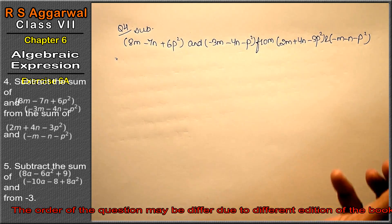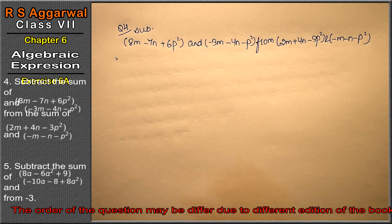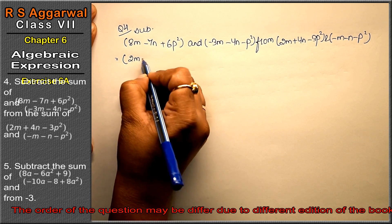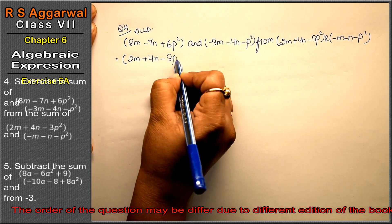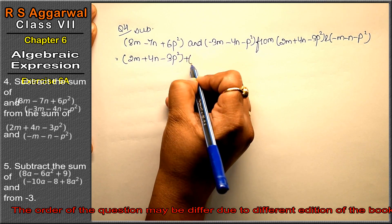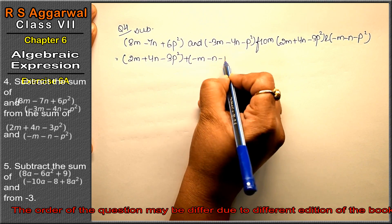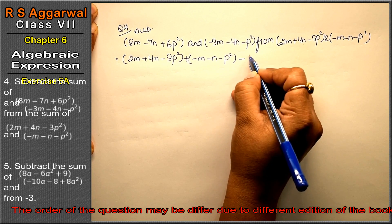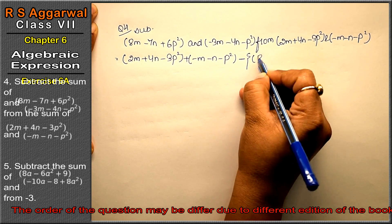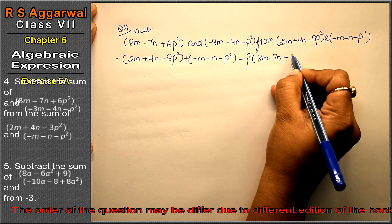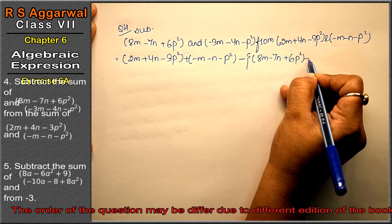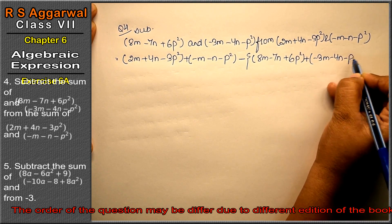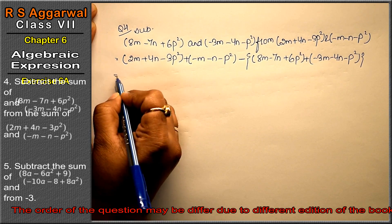We know that we first write the expression after 'from'. So we write: 2m plus 4n minus 3p² plus minus m minus n minus p², and we subtract from 8m minus 7n plus 6p² plus minus 3m minus 4n minus p².